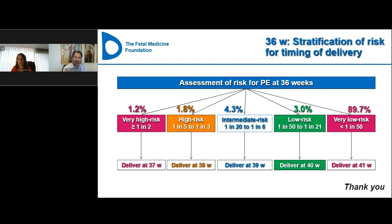There is a question about PAPP-A: since we already measure it for Down syndrome, should we just use PAPP-A instead of PLGF? Let me be abundantly clear: PAPP-A is a very poor replacement for biochemical testing in first trimester preeclampsia screening. PAPP-A is only useful as a predictor when you do not measure uterine artery. Once you include uterine artery Doppler, PAPP-A adds nothing. PLGF is far more effective than PAPP-A in first trimester screening for preterm preeclampsia.